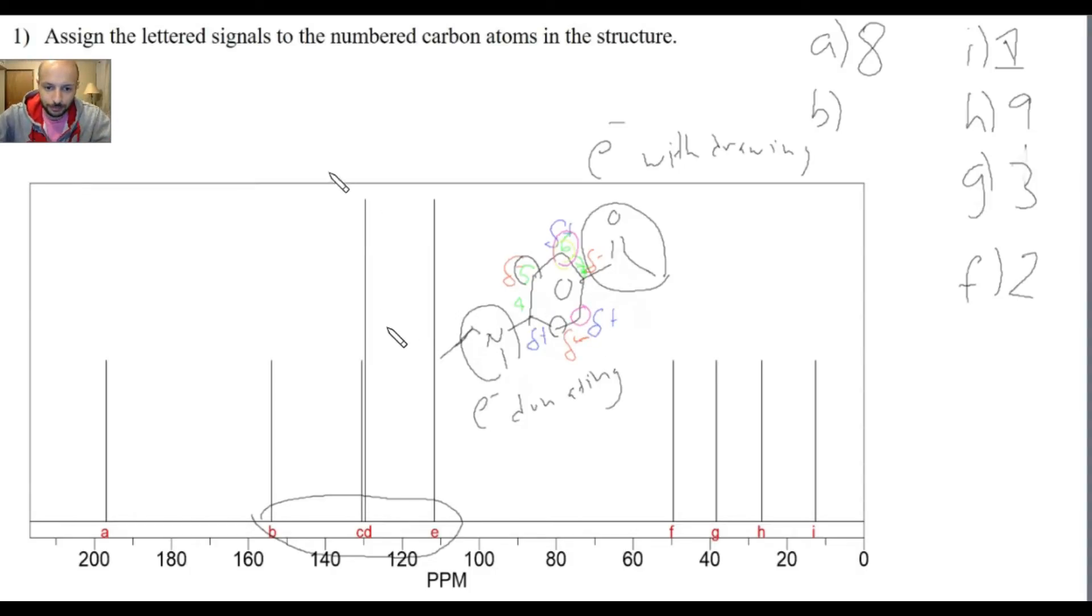So, the first thing you want to notice is that there's two very short peaks and two very long peaks. The height of the peak is proportional to the number of identical carbons. So we can say that peak E and D is equal to carbon 6 or 5, we haven't determined which one is which. And B and C is equal to either 4 or 7, because of the heights.